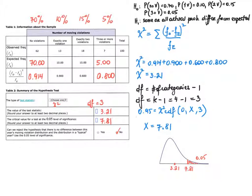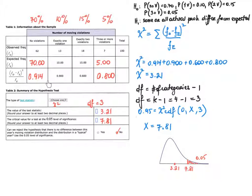The last row requires computations using the formula: take the observed frequency, subtract the expected frequency, square this quantity, and divide by the expected frequency. To fill in the first cell, we take the observed quantity 62 minus 70, which gives −8. Squaring gives 64, then dividing by the expected frequency of 70 gives 64/70 = 0.914, rounded to three decimal places.